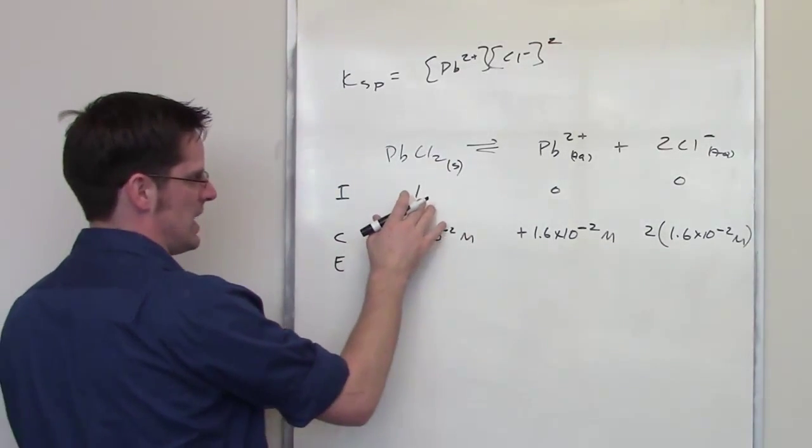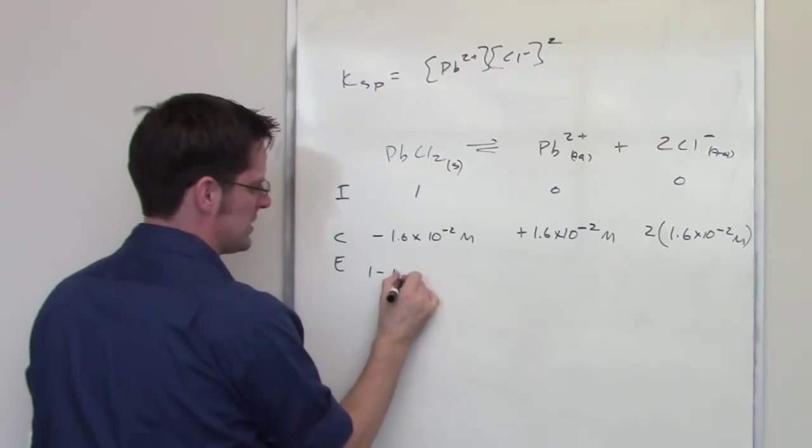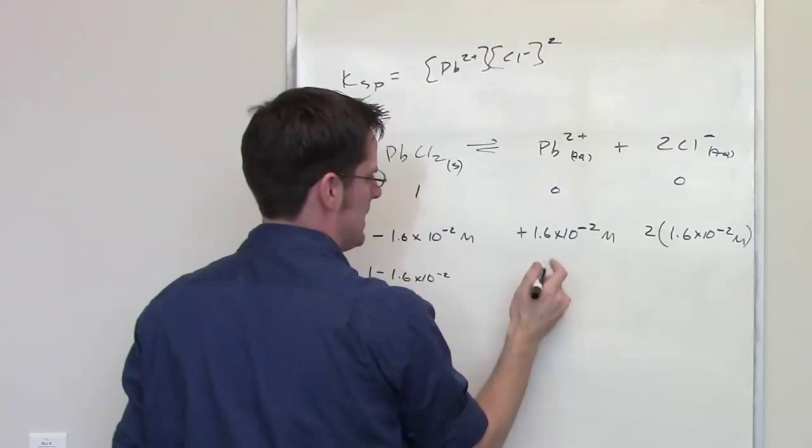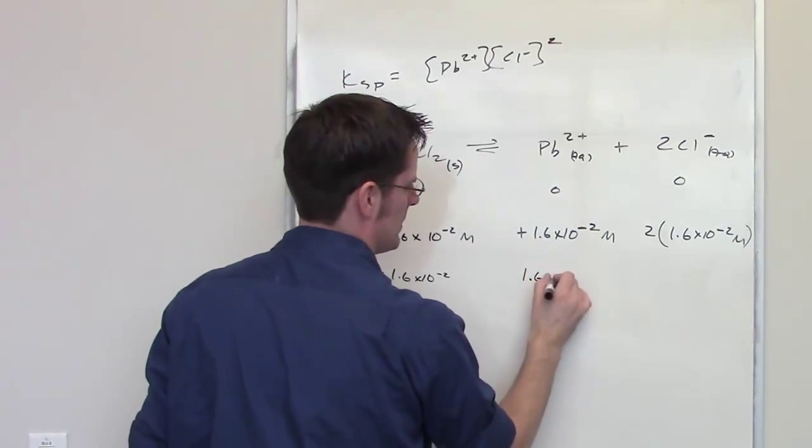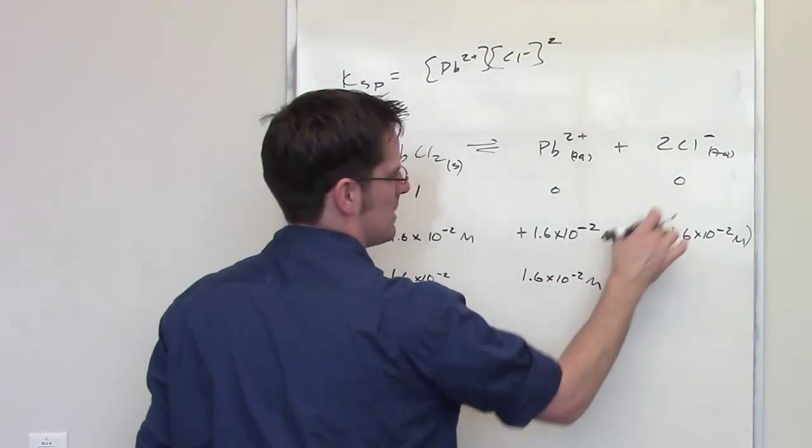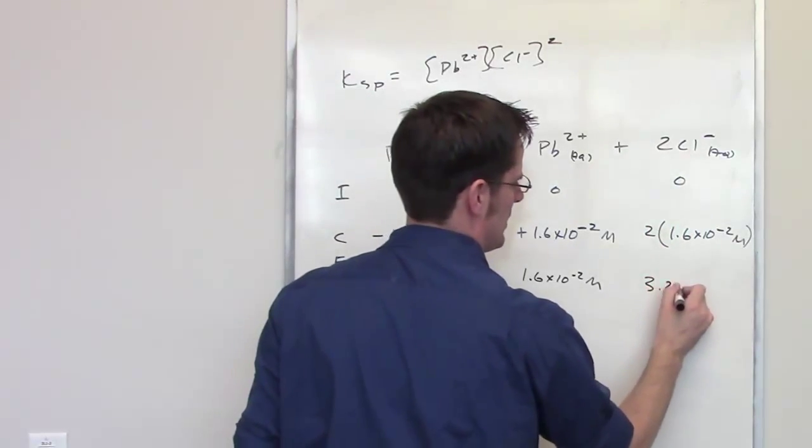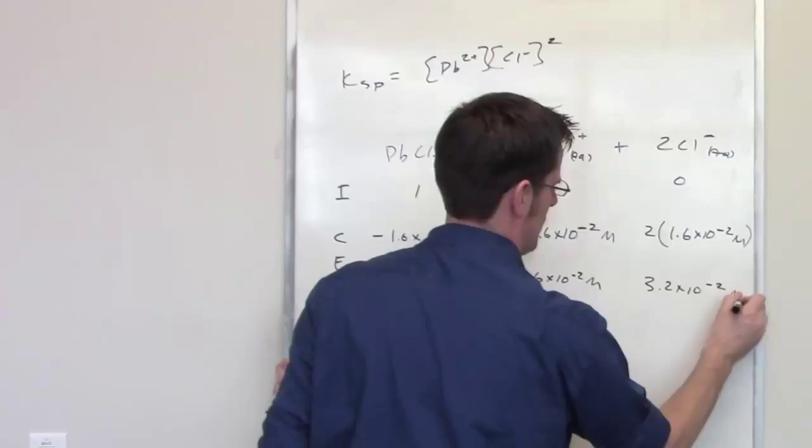The final concentrations of each of these then is going to be 1 minus this number for my lead chloride. It's going to be 0 plus this number, 1.6 times 10 to the negative 2, and it's going to be 0 plus 2 times this number. So that's going to be 3.2 times 10 to the negative 2 molar.